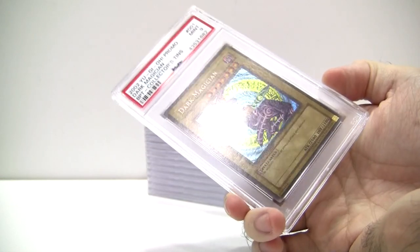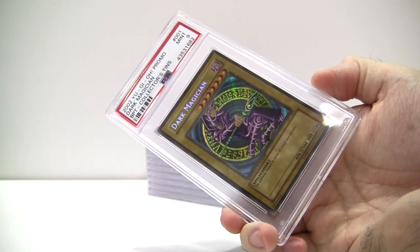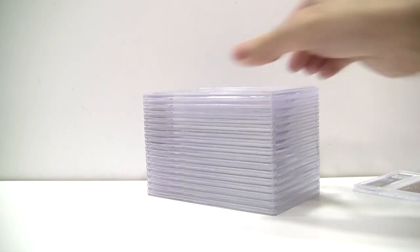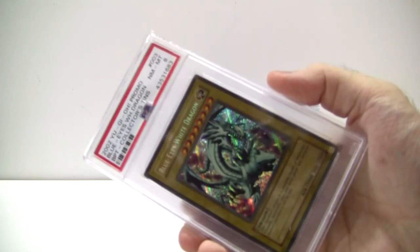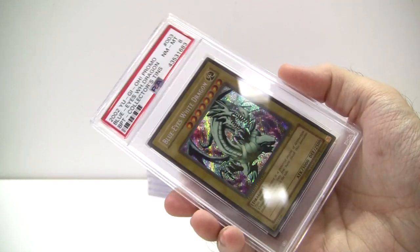We first start off with two cards from the very first collector's tins from 2002. We have BPT-001 Dark Magician, and we have BPT-003 Blue Eyes White Dragon.